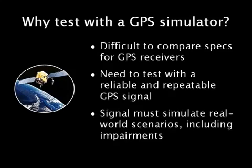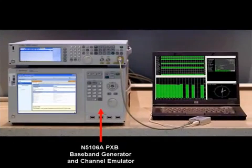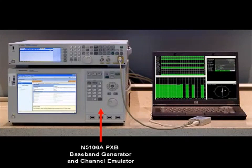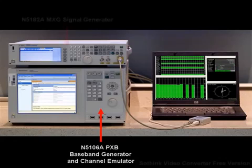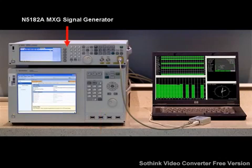The GPS signal must conform to real-world scenarios and also include the capability to include real-life impairments. The instruments used to create the GPS signals are the N5106A PXB baseband generator and channel emulator, and the N5182A MXG signal generator.